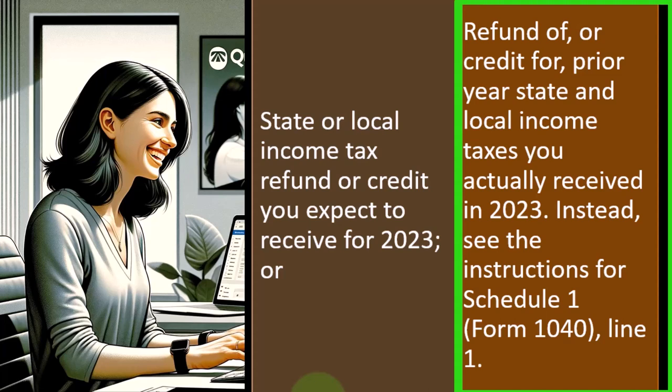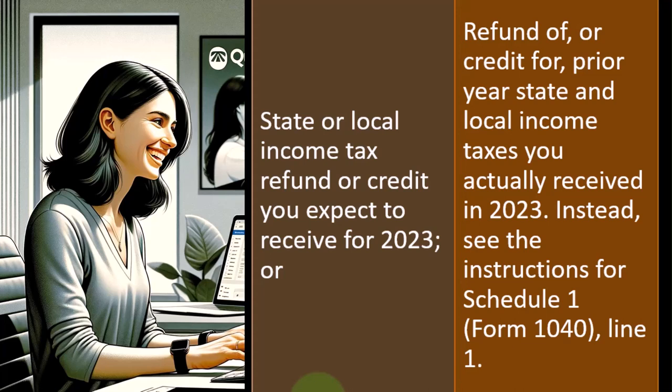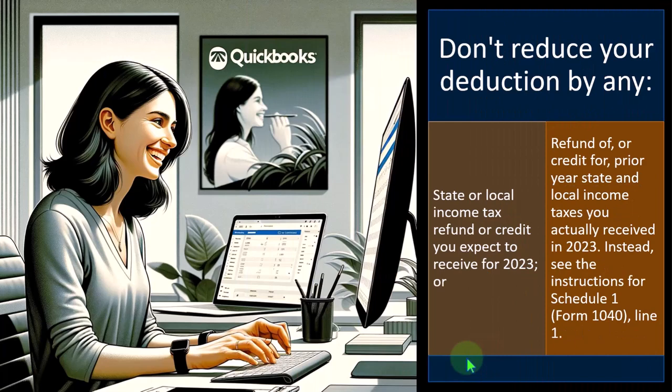Regarding a refund of or credit for prior year state and local income taxes actually received in 2023 — see the instructions for Schedule 1, Form 1040, Line 1. If you got a refund of state taxes in 2023 for the overpayment of taxes paid in 2022, you shouldn't reduce your current Schedule A deduction by that refund. Instead, you determine whether to include the refund in income on Schedule 1 — you fix the prior-year over-deduction not by amending last year's return and not by reducing the Schedule A deduction this year, but by determining if you have to include it in income on Schedule 1, as discussed in the income section.